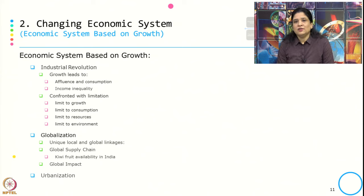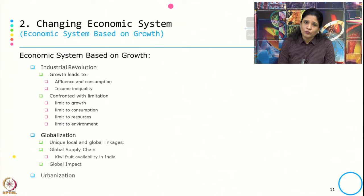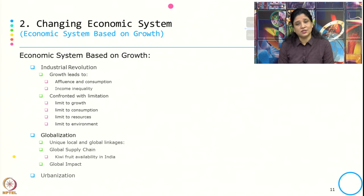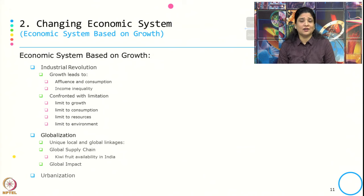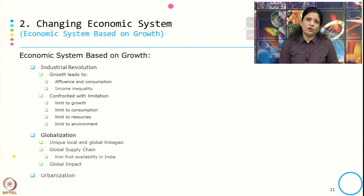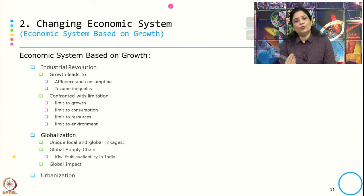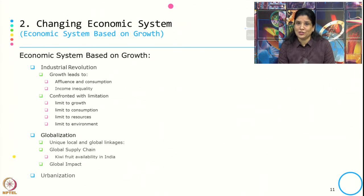The second cluster is the changing economic system. After the industrial revolution, the economic system became based on growth — through industrialization, more industrial activity, more income, and more growth. Subsequent developments like globalization and urbanization also led to growth-based economic systems. While growth creates affluence and consumption, it confronts the concept of limits — limit to growth, consumption, resources, and environment — and leads to inequality of income.